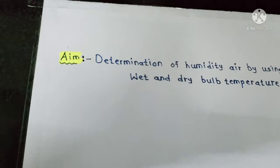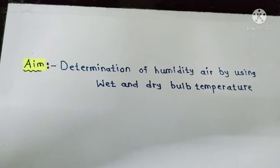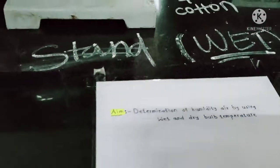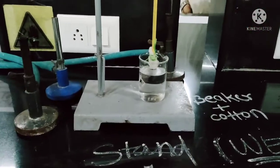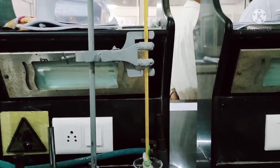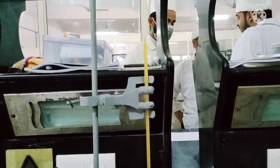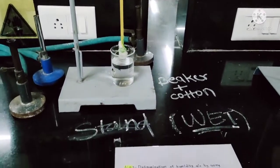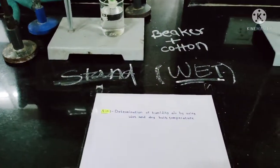The next practical is determination of humidity air by using wet and dry bulb temperature. For this practical we require thermometer, cotton, thread, beaker, and stand.